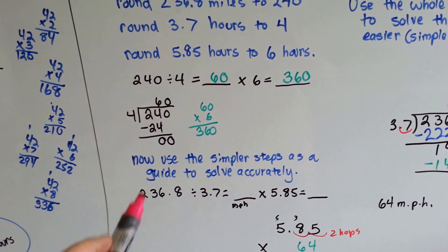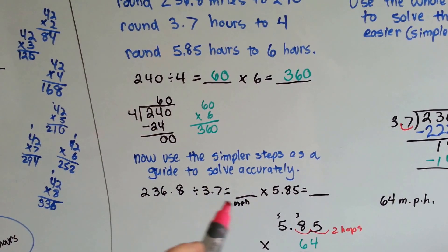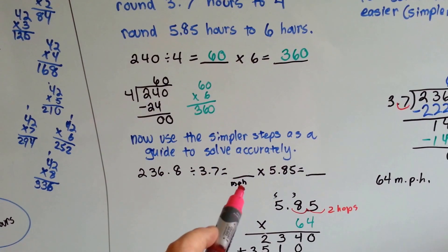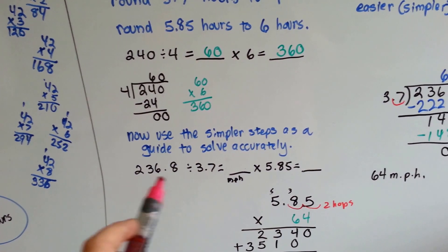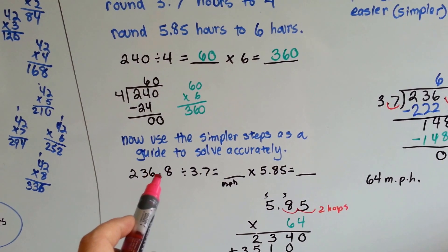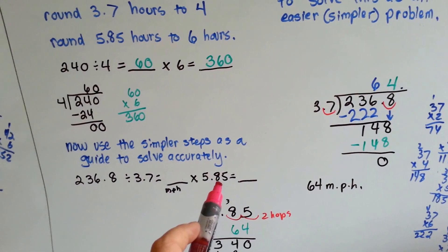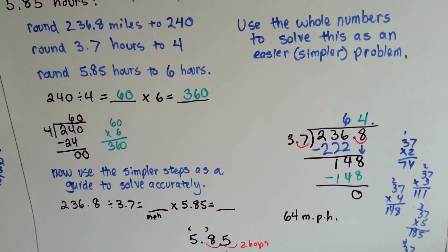We use the simpler steps as a guide to solve it accurately. We can rewrite the equation with the real numbers in it. We need to divide 236.8 by 3.7. Find the miles per hour and then multiply it by the hours to get the real answer.